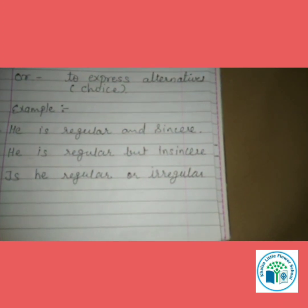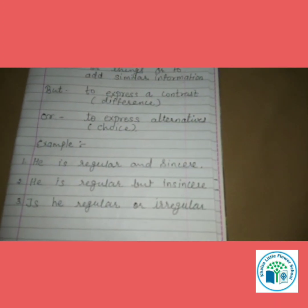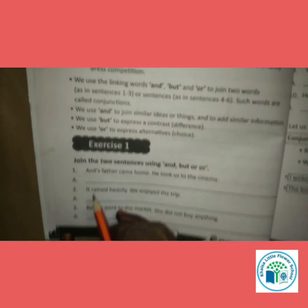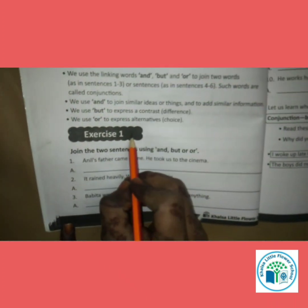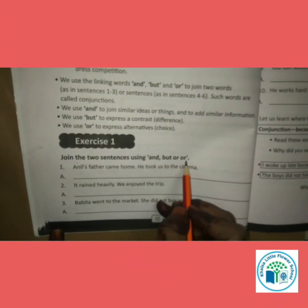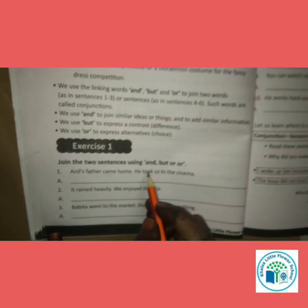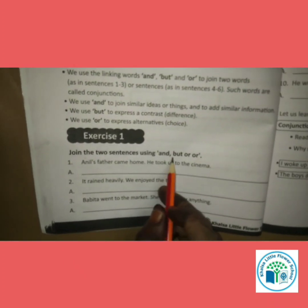So today we are going to do Exercise number one on page number fifty-two in our grammar textbook. Open your textbook, page number fifty-two, Exercise one: Join the two sentences using 'and', 'but', or 'or'. We need to see if there is similar information, a difference, or a choice — and according to that, use the conjunction.